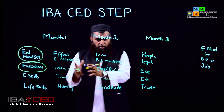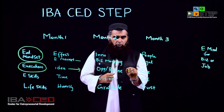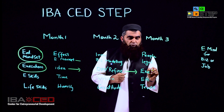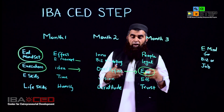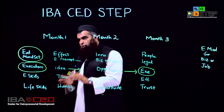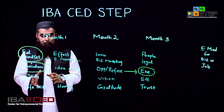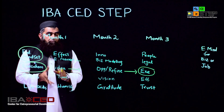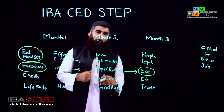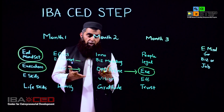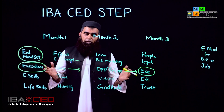Once the idea is defined as an opportunity, by the third month, students begin execution. In addition, the third module covers entrepreneurial skills — time management, vision management, and effectuation skills such as bird-in-hand thinking, affordable loss, and the ability to develop a team. These elements reinforce the first two modules.